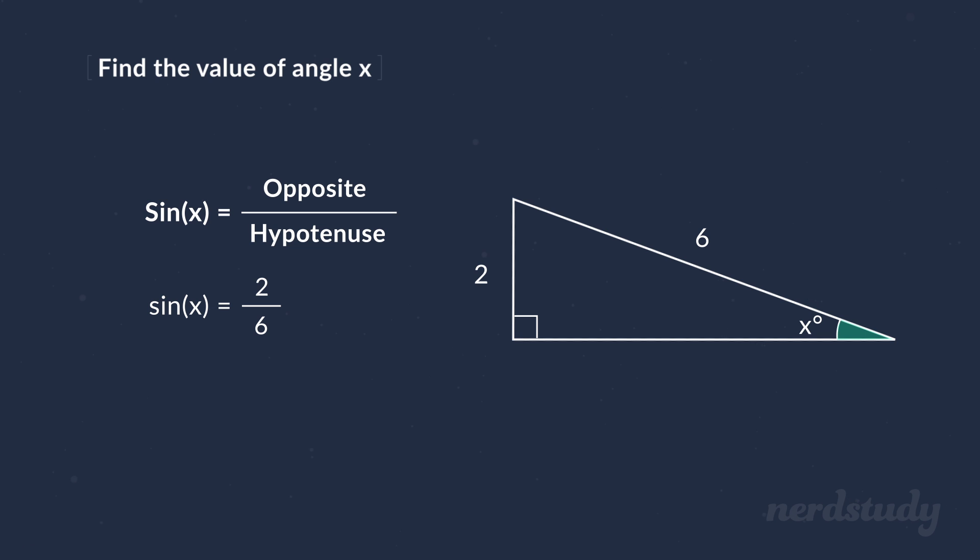So let's plug these values into the formula to get this. And we can simplify this to get sine of x equals one over three. Now, is there anything else that we can do? Well, it turns out there is. When you want to find the x value in this situation, all you have to do is take the inverse sine of one over three, and it'll be equal to x.